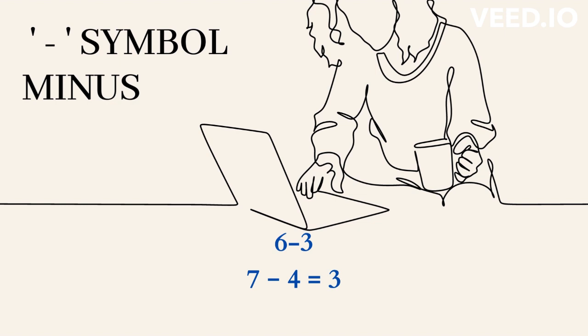In English, we call this symbol minus, for example, 6 minus 3. You can also say the same calculation in a different way by using a verb and saying subtract 6 by 3.